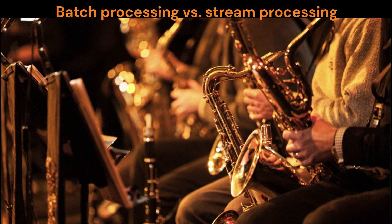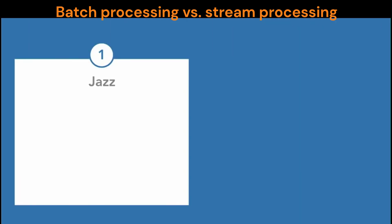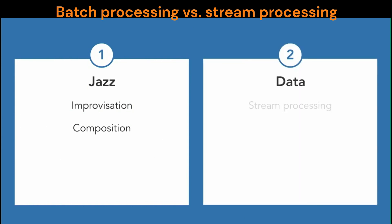In jazz, the improvisation — the coming up in the stream of the moment — versus the composition where the work has to be done ahead of time, and you've got to put a bow on it before you move on. That's a lot like in data what is called stream processing, where you're processing the data as it comes in, live, in real time. Versus batch processing, where you take data that's been wrapped up and put a bow on it — it's in a data set, it's set and you run with it.